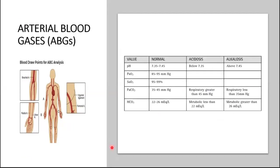Let's look at the results of our arterial blood gas. The most important values we'll be looking at are our pH, our pCO2, and our bicarbonate. pH represents parts of hydrogen, or percentage of hydrogen, and it reflects the overall acid-base balance of the body.